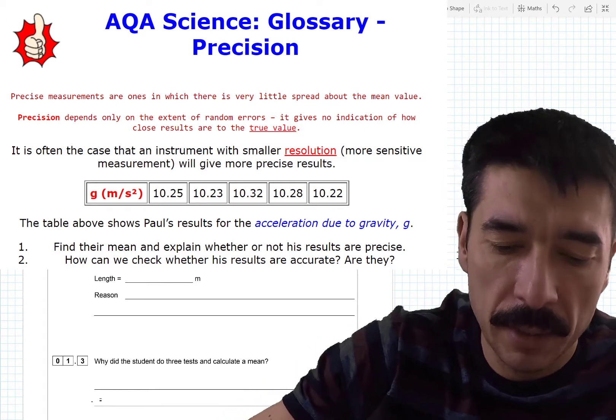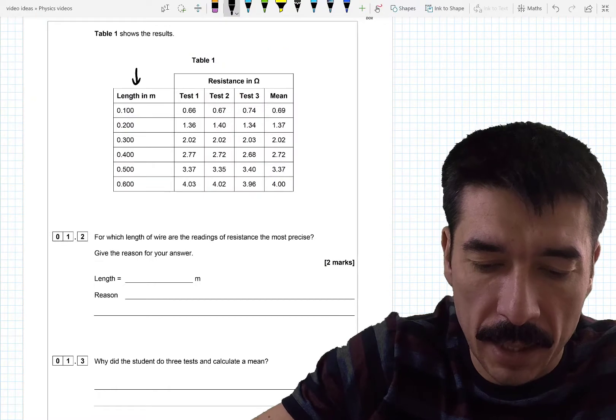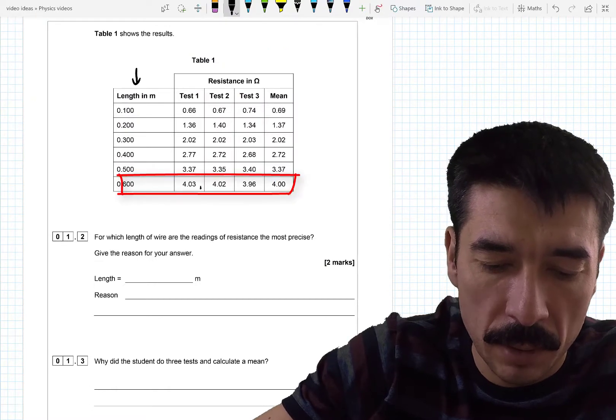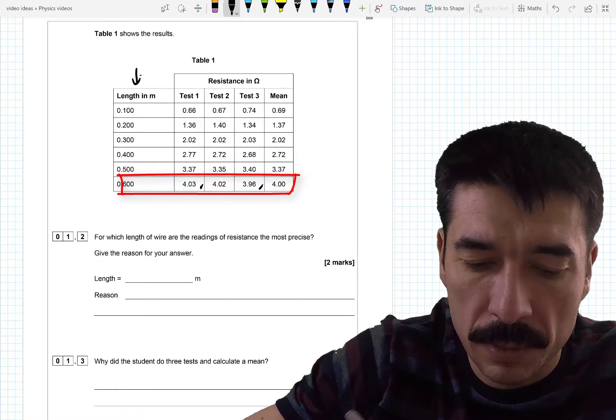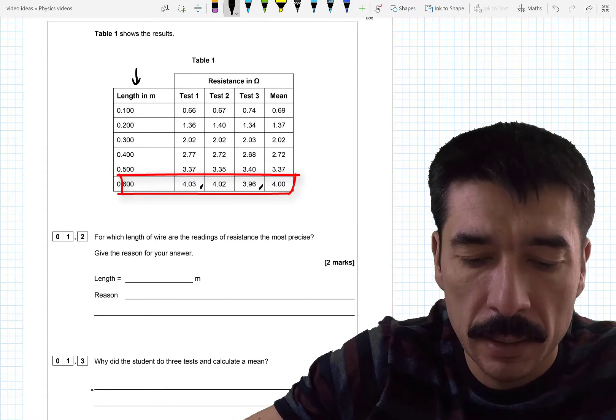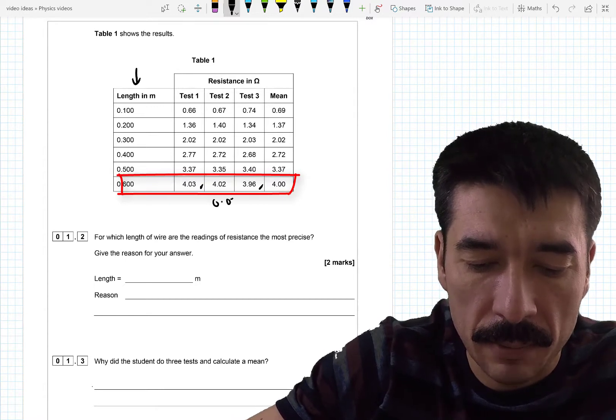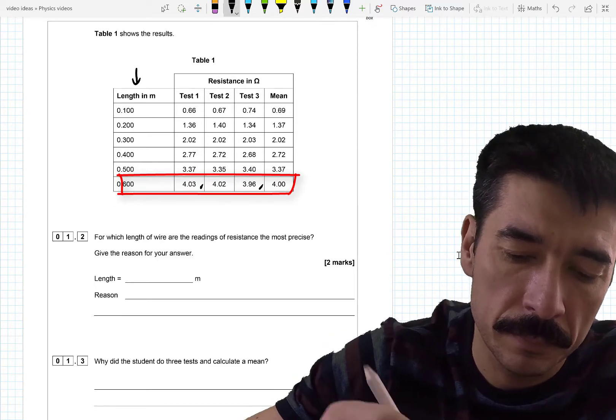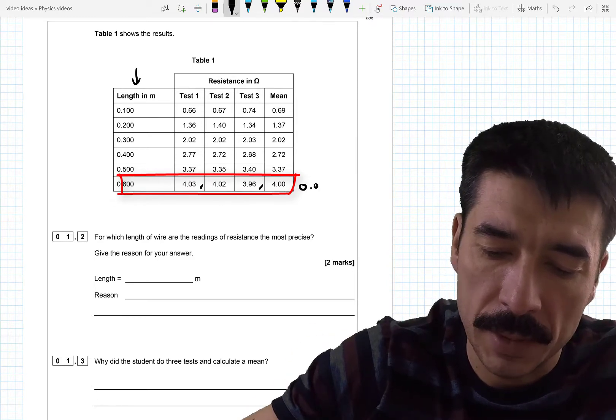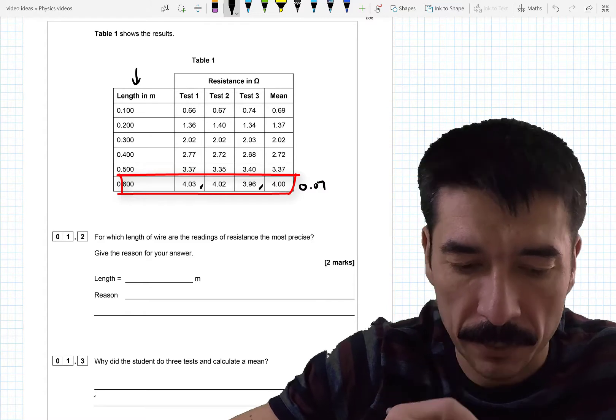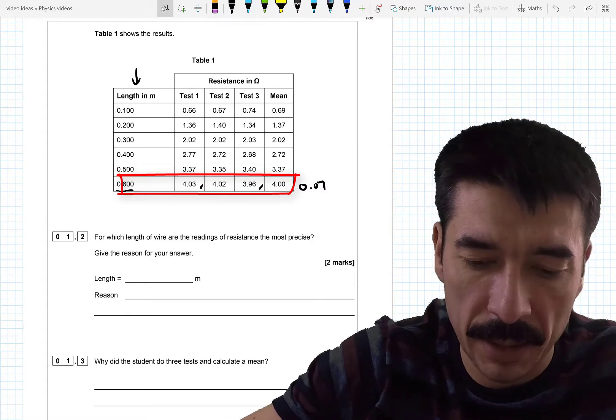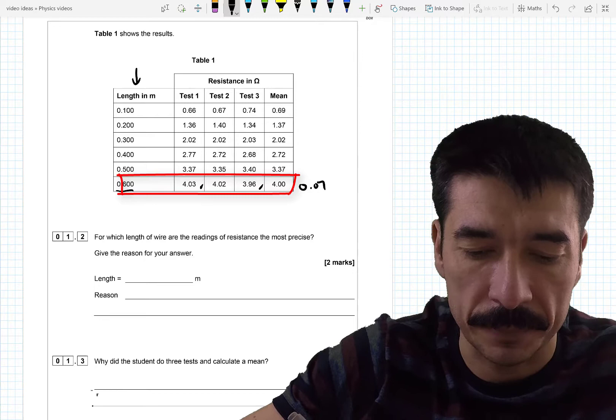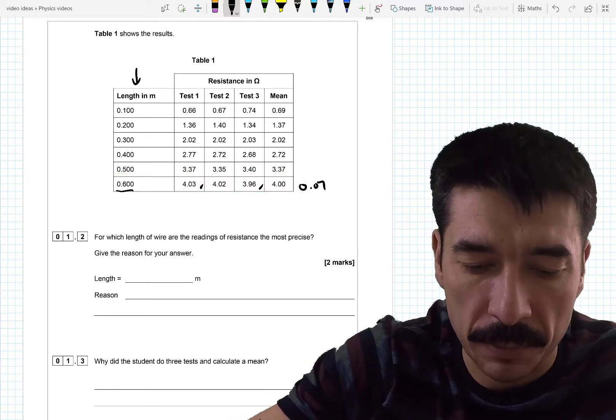So if you have a look from here to here, the highest number is this one. The lowest number is this one. The spread then is 0.07. So that's the spread for that value. Not 0.07. So for the length value 0.6, the readings taken, the spread is 0.07.